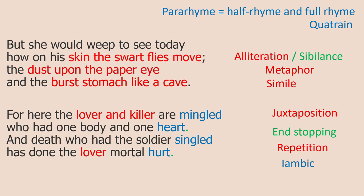The poem is largely written in an iambic metre — de-dum, unstressed followed by stressed. Listen to the final line: 'has done the lover mortal hurt.' The second syllable in each foot is the dominant one. This iambic rhythmic pattern carries through the poem, lending it a consistent rhythm.